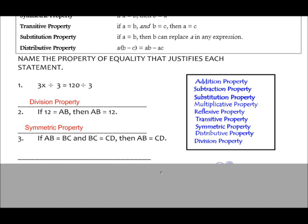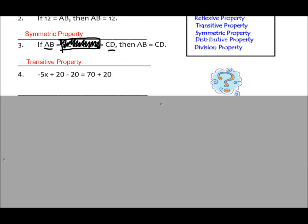Look at number 3 and pause the video to determine what property it is. Number 3 is the transitive property. You have two terms that are the same back to back. When those two terms go away and we determine that the first and third term equal each other, that's called the transitive property.